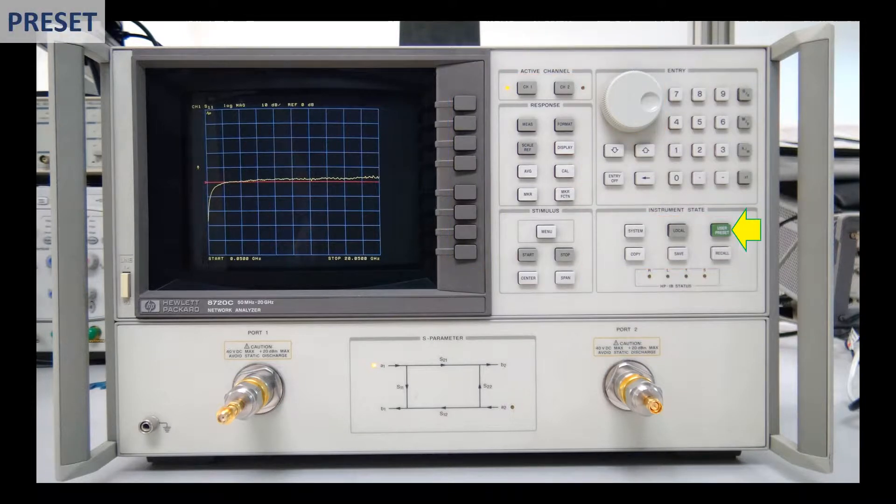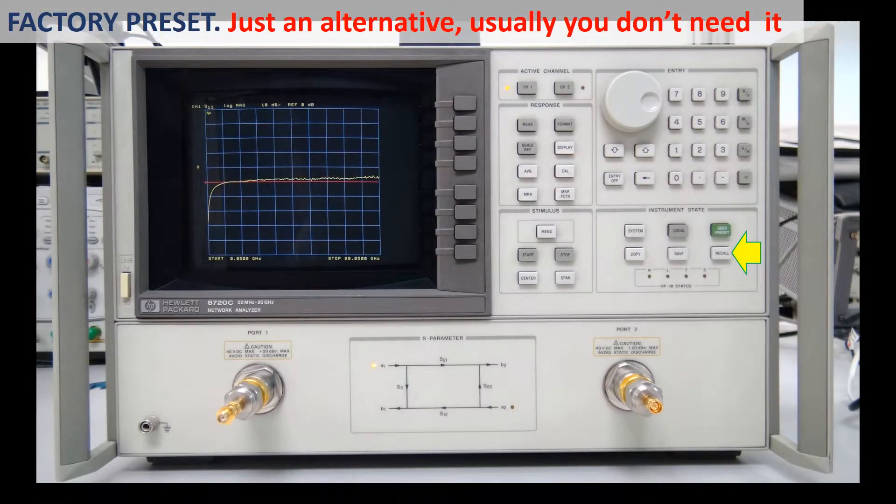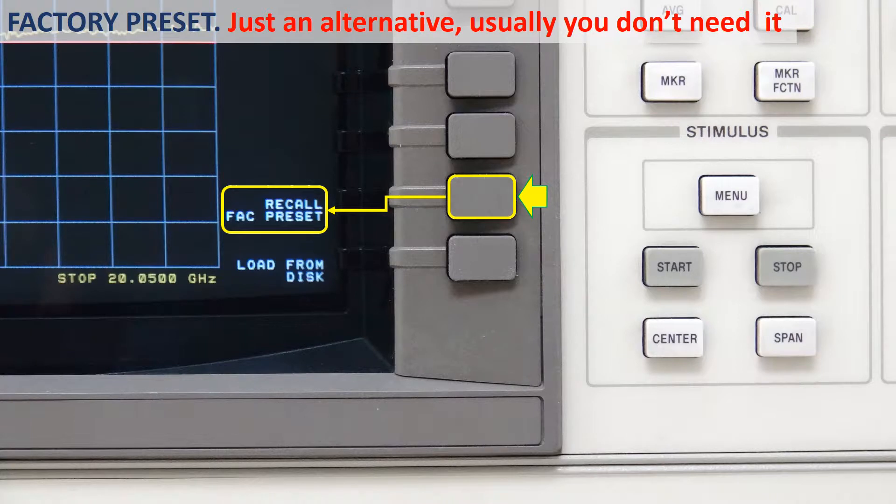I will start by pressing this green key labeled User Preset. It allows you to return the analyzer to a known condition. This condition is defined in a set of variables stored in one of the registries reserved to recover the instrument state. It is registry number 5. It is a registry that can be modified by the user. If you have problems recovering a known instrument state, you can also press Recall key and then the soft key named Recall Factory Preset to return to the factory default condition.